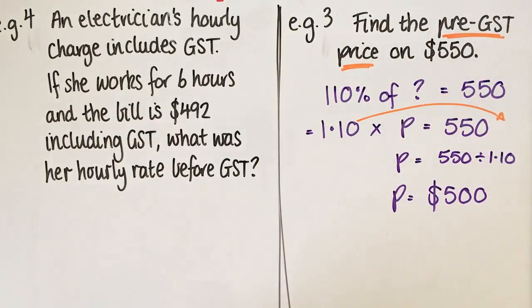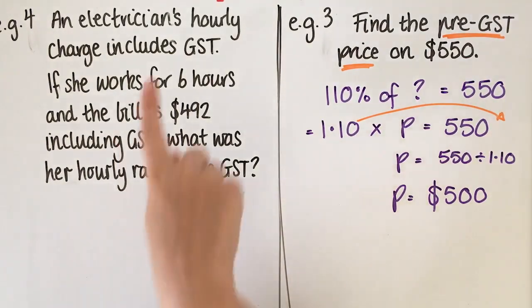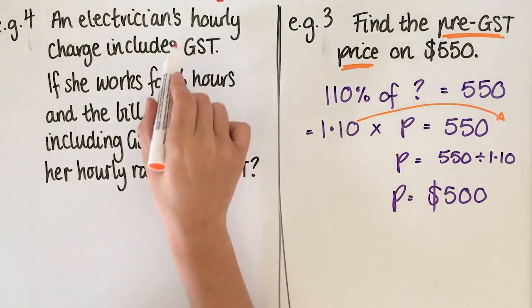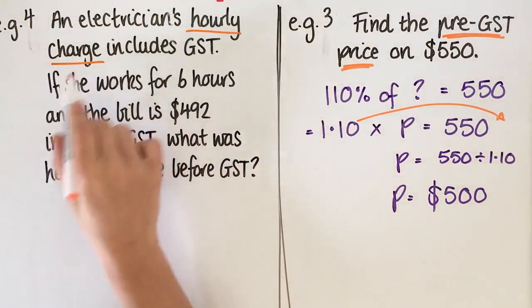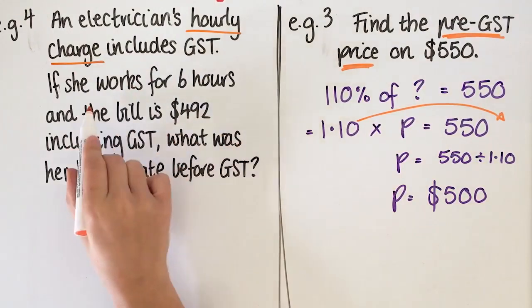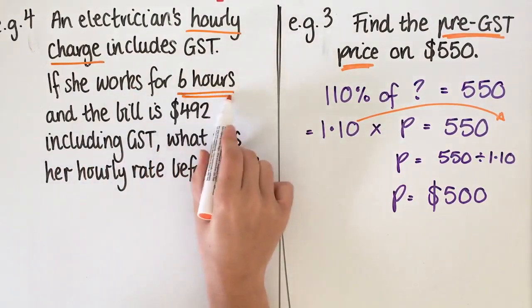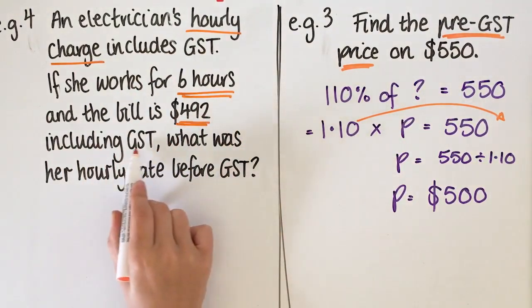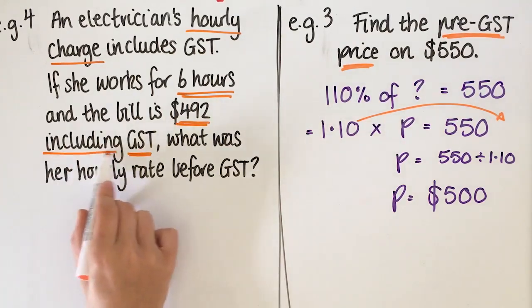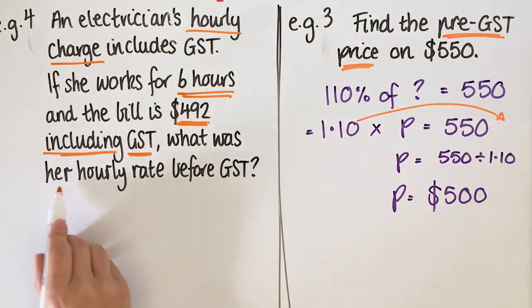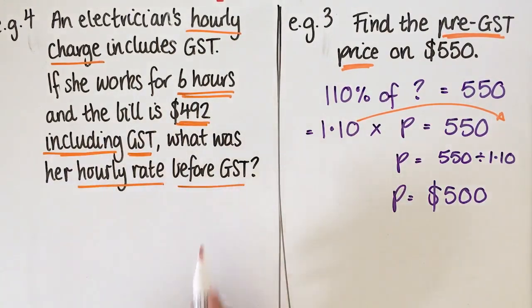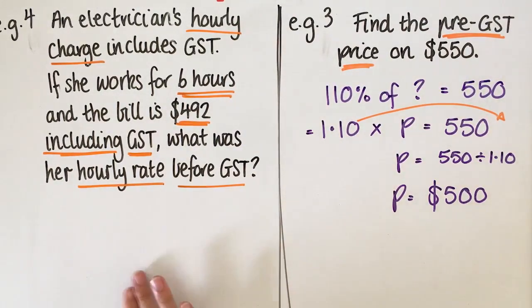This is the last one we're going to do. An electrician's hourly rate includes GST. So if she works for six hours and the bill is $492 including GST, what was her hourly rate before GST? Okay, so this is just a trickier version of this question here.